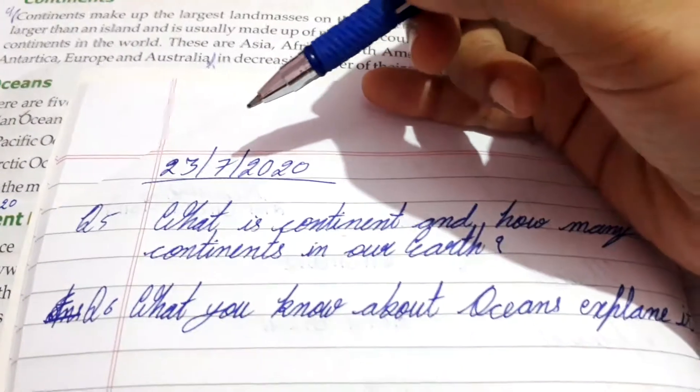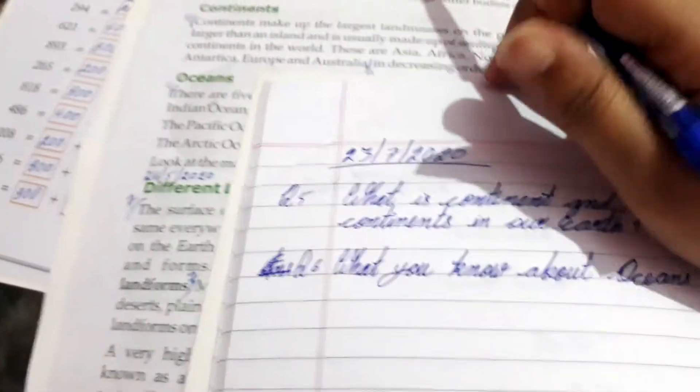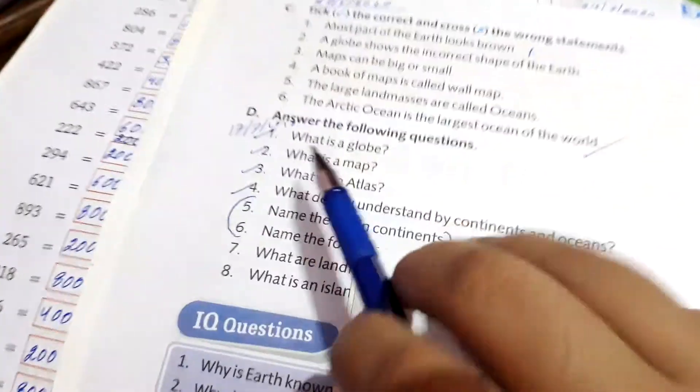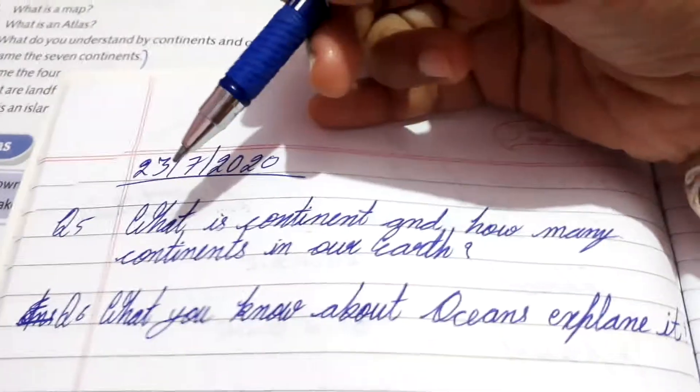Now first you mention a date, 23-7-2020. Question number 5, already we done it, question number 4, 4 questions, okay? Already we completed 1, 2, 3, 4 questions. Now it's time for question number 5.